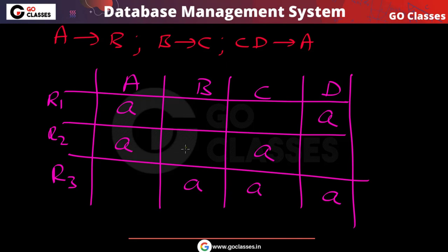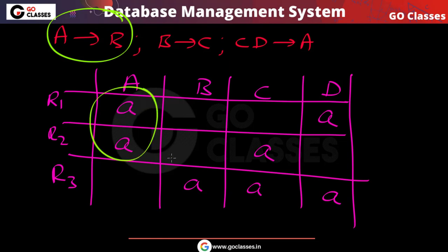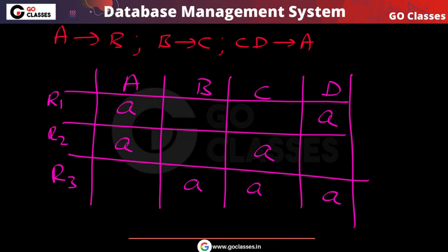Now, since A determines B, whenever two tuples have the same A value, their B value must also be the same. Applying this to the table, in the two tuples where A agrees, B must also agree — so we update those B entries accordingly.